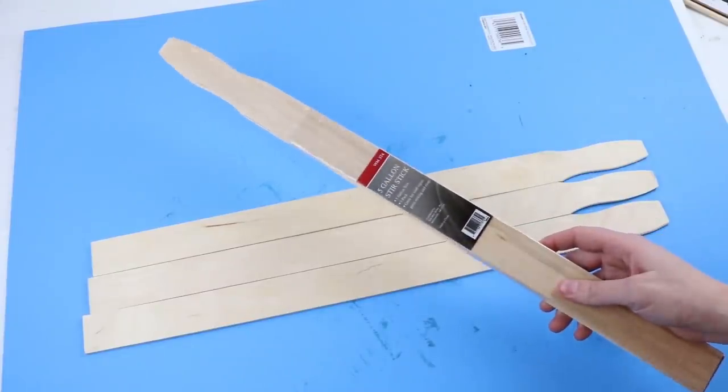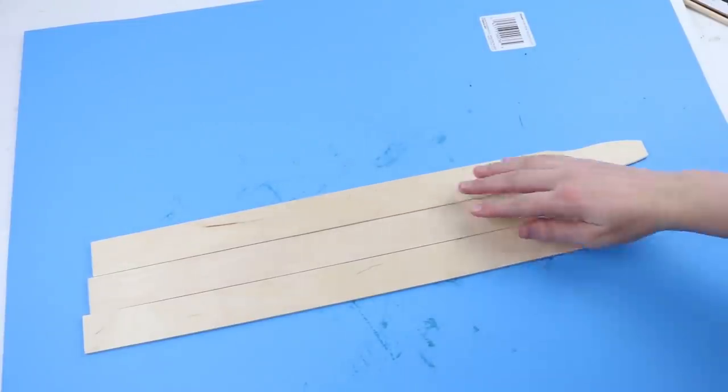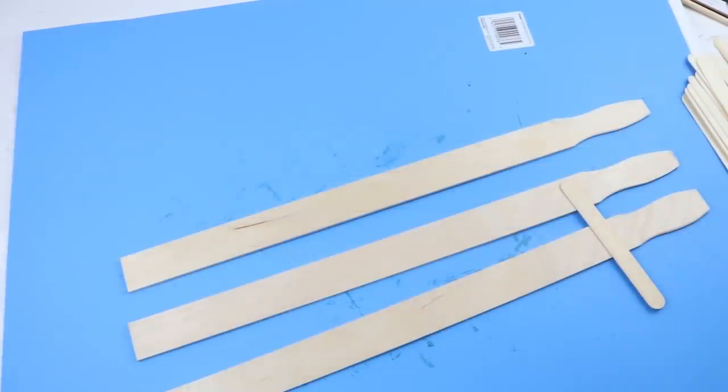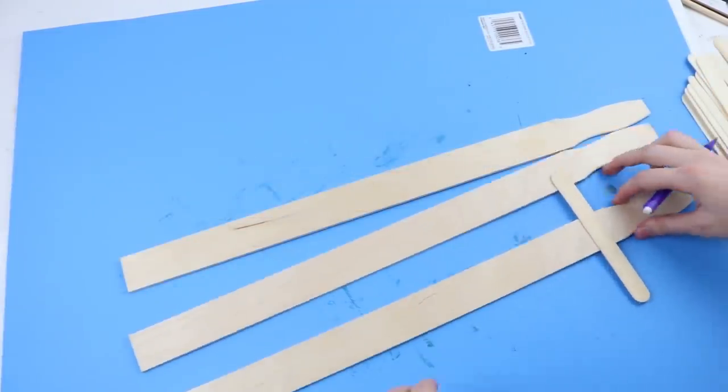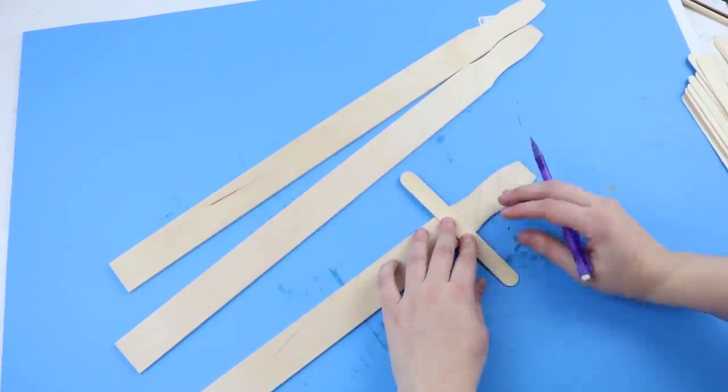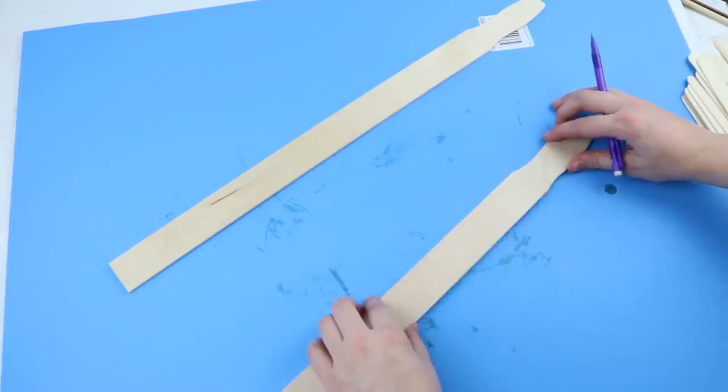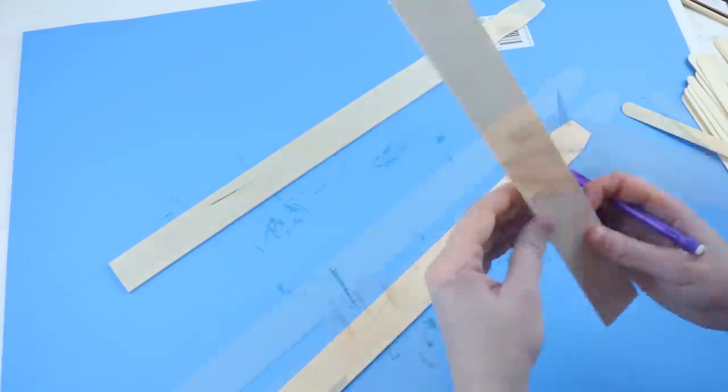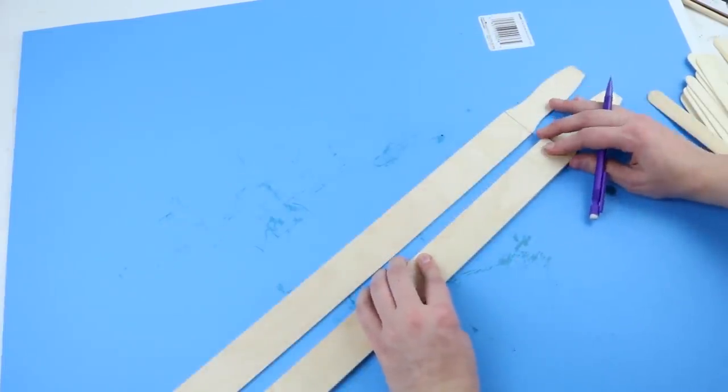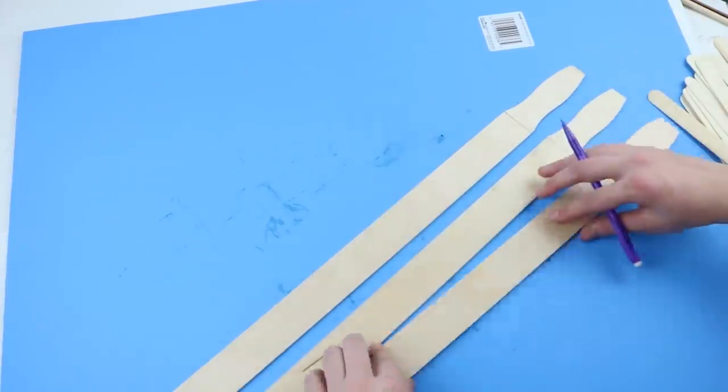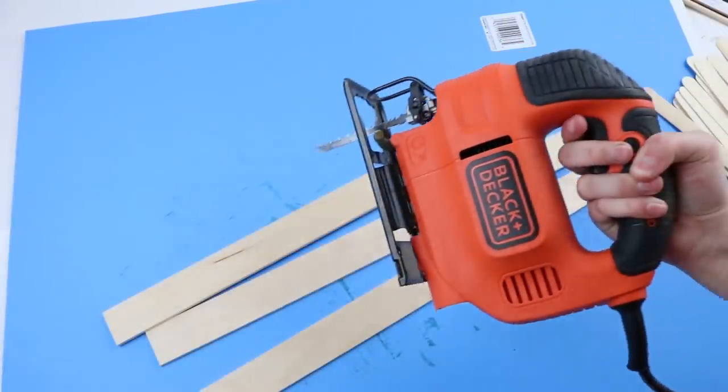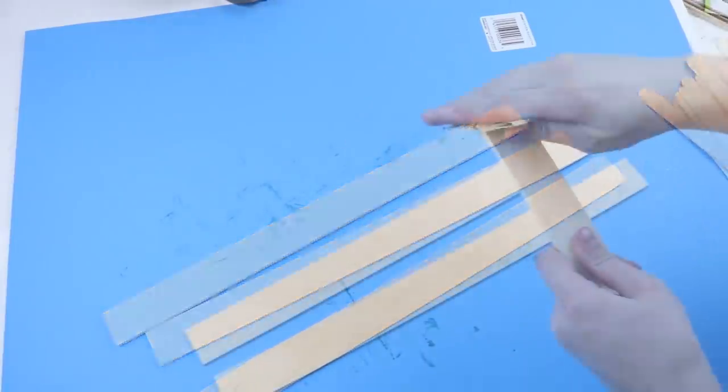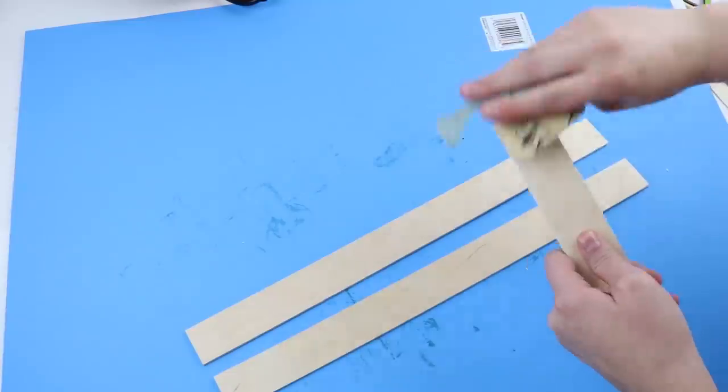For this project, you will need one pack of these five gallon stir sticks that we got from Walmart and they are $0.97. To cut them down, I just kind of measured where it started to curve and then I drew a line and then just put the other ones up next to it so that they all had about the same length. To cut them, I just used this jigsaw that we got from Walmart and it has worked great for us. There's a link in the description below for this as well. After those were cut, I just sanded them down.